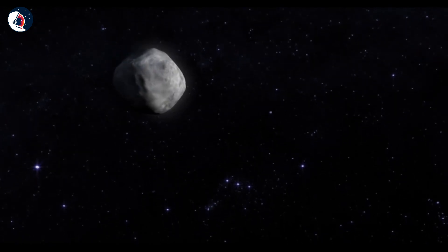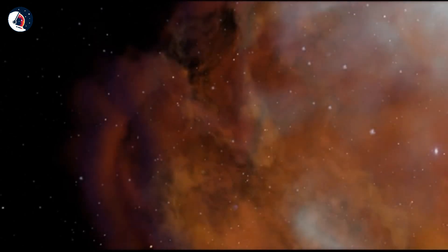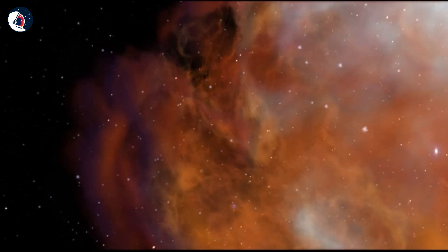The sun formed first from the vast material, with the planets close behind. Although it may look empty, space is filled with gas and dust.